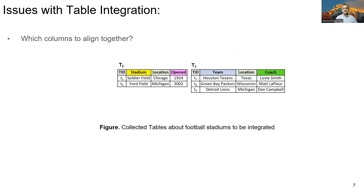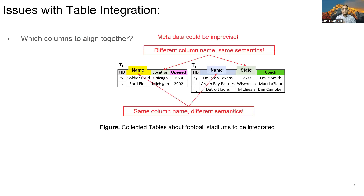Now that we saw the importance of integrating the tables, let's see the possible issues with table integration. Integrating the collected tables mainly faces two issues. First, it is generally unclear which columns from the input tables to align together in the integrated table. In relational tables, such information is generally provided by column headers. However, in the case of data lake tables, we cannot rely on column headers because they can be inconsistent between tables, as tables may be collected from different sources using different techniques. For example, in both tables T2 and T3, we can have the same column header such as 'name' for non-aligning columns — the stadium column in T1 and team column in T3 — and it is not a good idea to align them just because they have the same column name, as their semantics is different. We can face a similar problem in the opposite direction as well — different column names but same semantics, such as the location column in table T2 and state column in table T3.